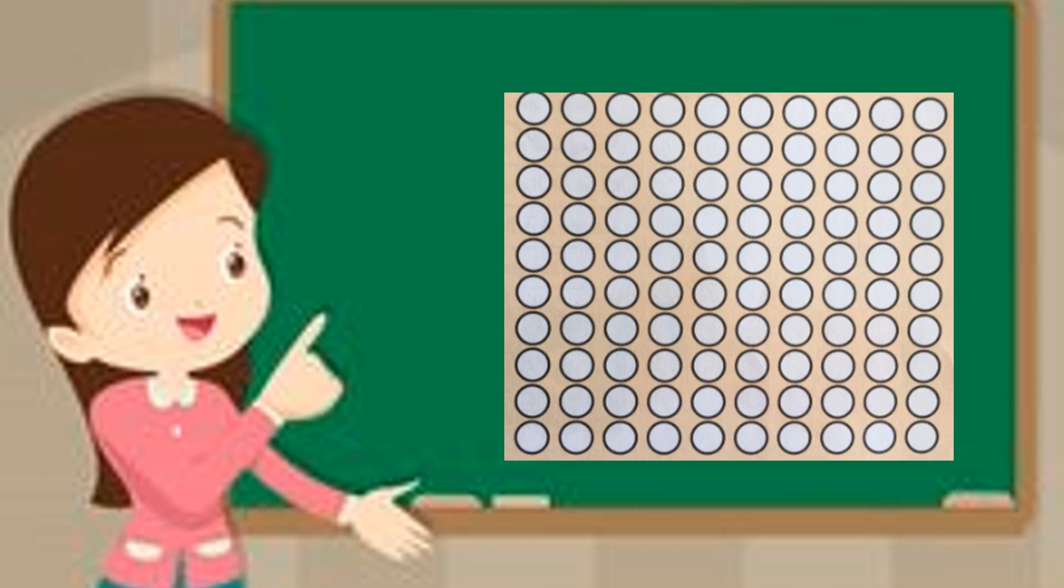We are going to use these dots to practice our counting. Now if you look at these dots, you will notice there's 10 across and there's 10 down. This makes counting easier because now we can use tens and units to count.